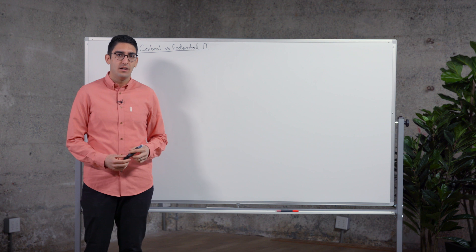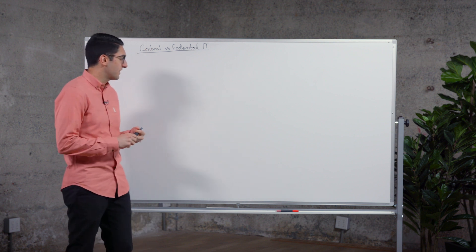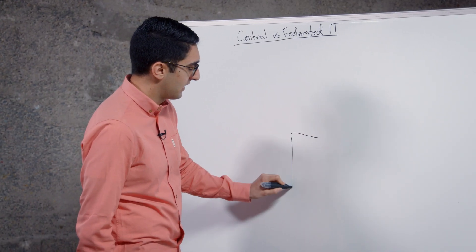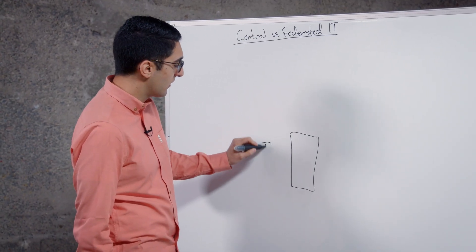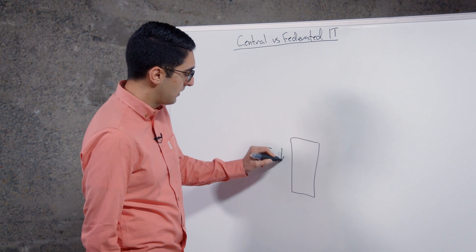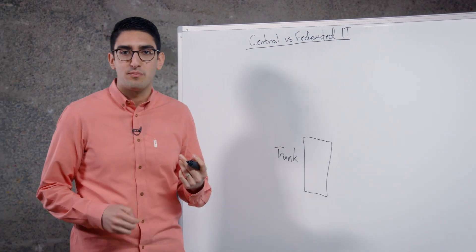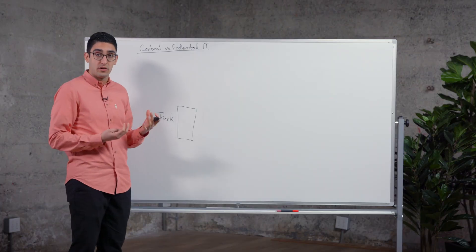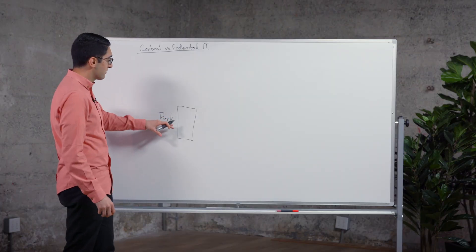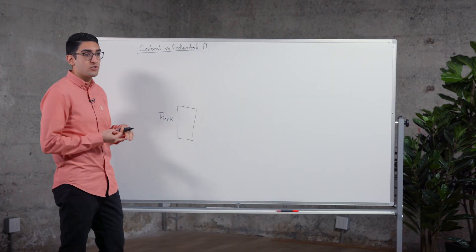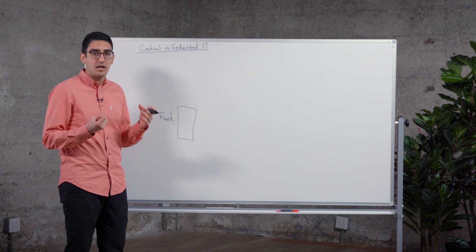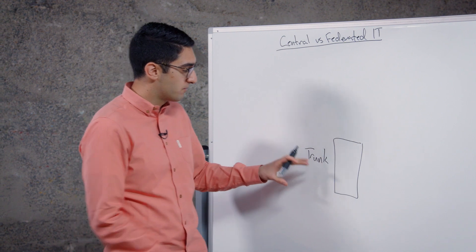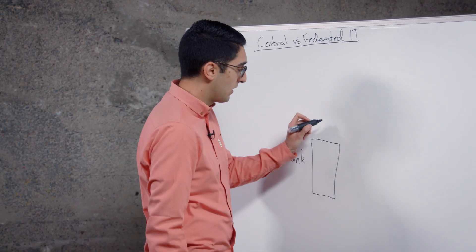When we talk about central IT, an analogy I like to use is thinking about it kind of like a tree. At the base layer we have a shared technology trunk, and the trunk is responsible for providing different IT services that are common across the entire organization. Examples of this tend to be things like single sign-on — everyone might log in with the same Active Directory system providing credentials.